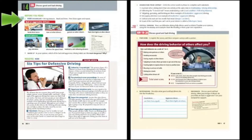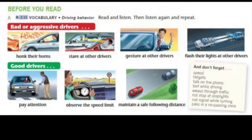Page 46. Before you read, Exercise A. Vocabulary: Driving behavior. Read and listen. Bad or aggressive drivers: honk their horns, stare at other drivers, gesture at other drivers, flash their lights at other drivers. Good drivers: pay attention, observe the speed limit, maintain a safe following distance. Now listen again and repeat.